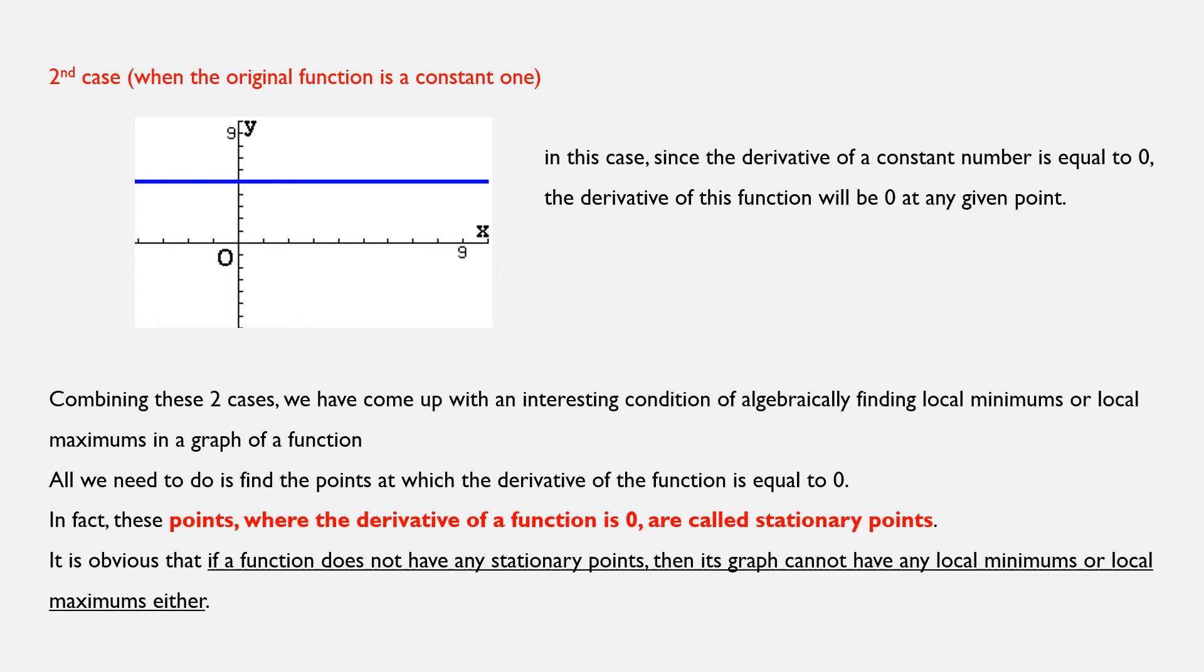So, is this all? No, because there is the second case, which is a peculiar one, and that's because in this case the original function is a constant one. For example, it could be the function f(x) equals 5. In this case, since the derivative of a constant number is equal to 0, here as well the derivative of this function, of this constant function, will be equal to 0 at any given point.